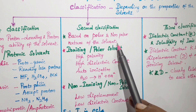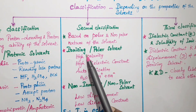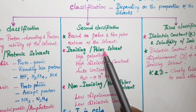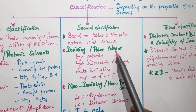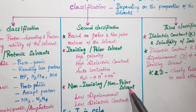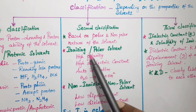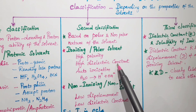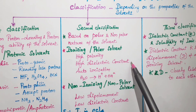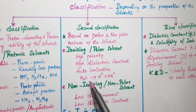The second classification is based on the polar and non-polar nature of the solvent. Polar solvents are ionizing solvents, and non-polar solvents are non-ionizing solvents. Polar solvents have high polarity, high dielectric constant (k value), and undergo auto-ionization — for example, water.